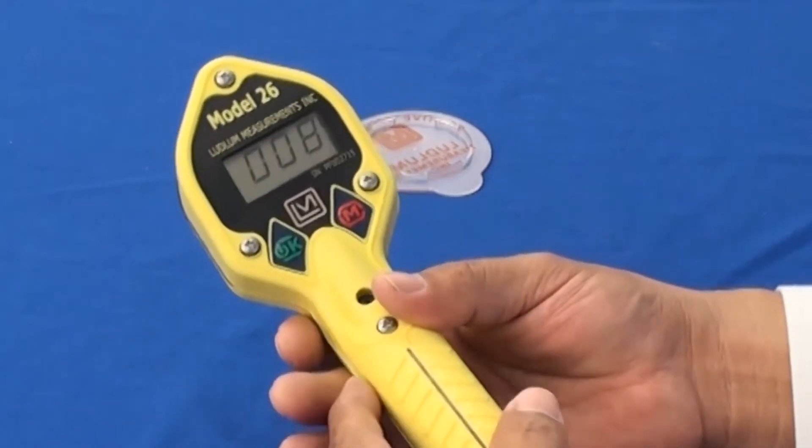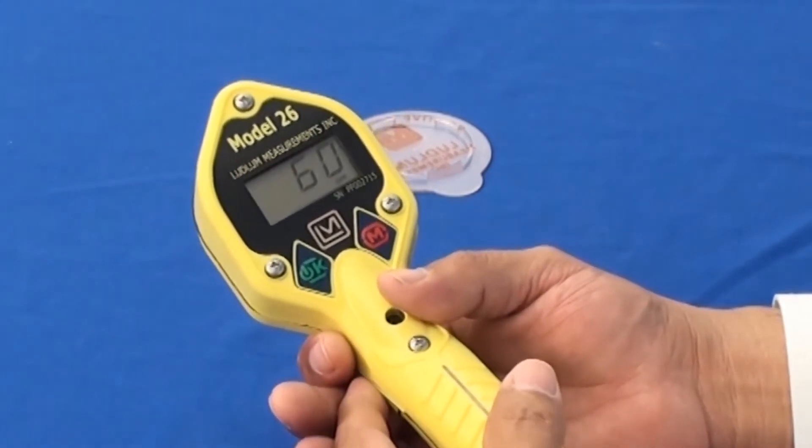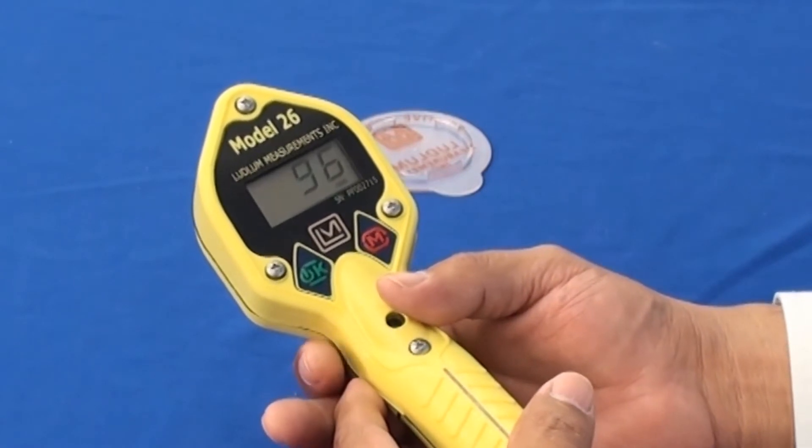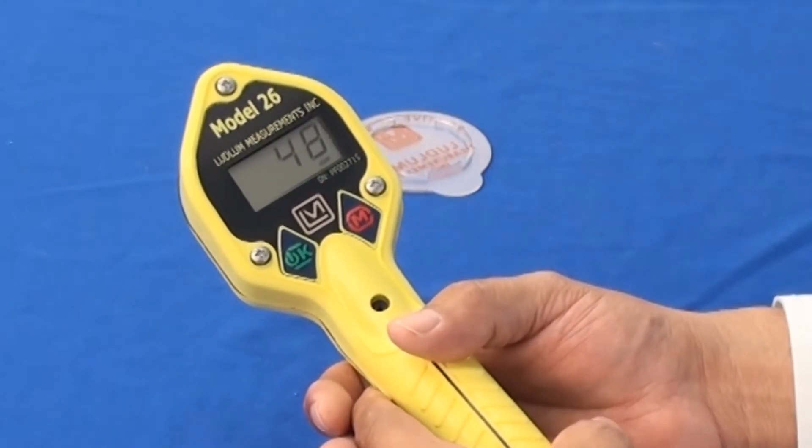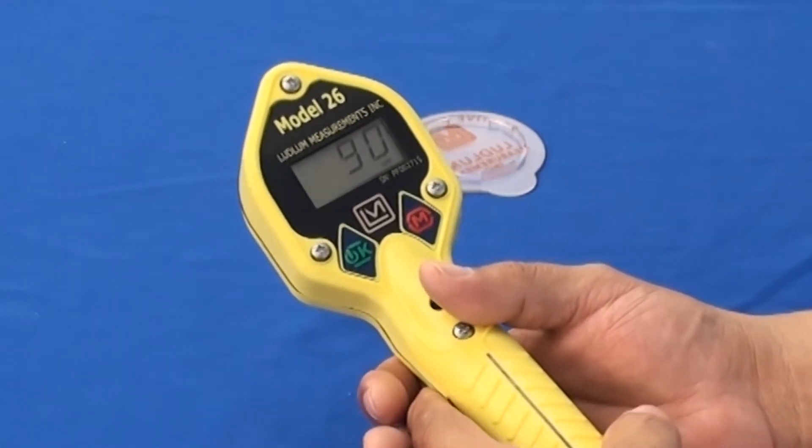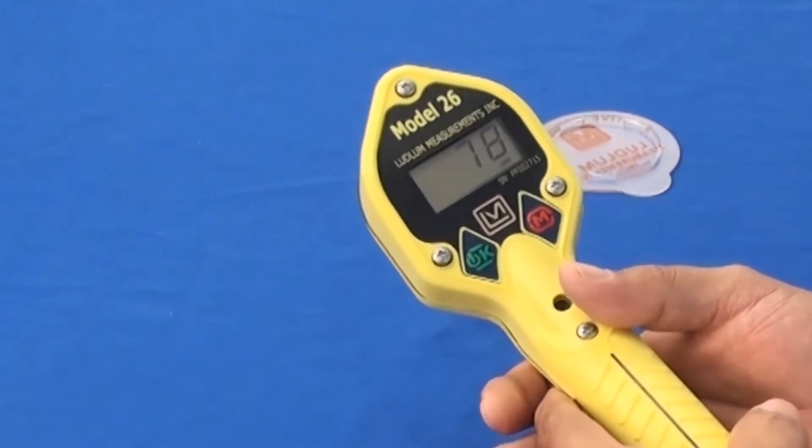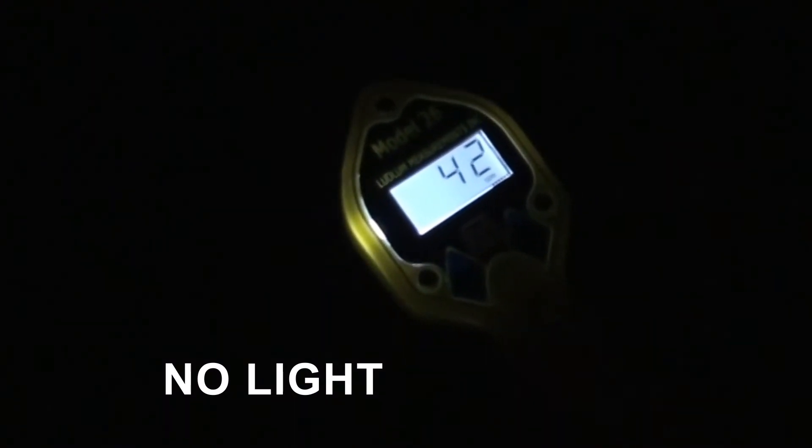The model 26 has a backlight feature that engages when you go to low light or no light in a situation where you're having to do a response check or a set of readings and you don't have enough light to visibly tell what's on the display. The backlight will engage on its own automatically and disengage once you're back into normal lighting. Here as you can see on the display of the model 26, the backlight has engaged and allows you to easily read the display.